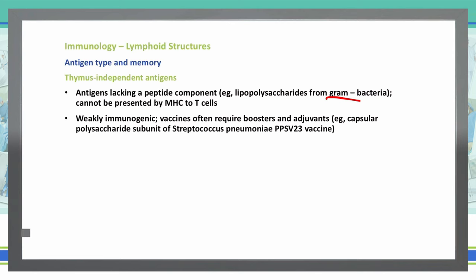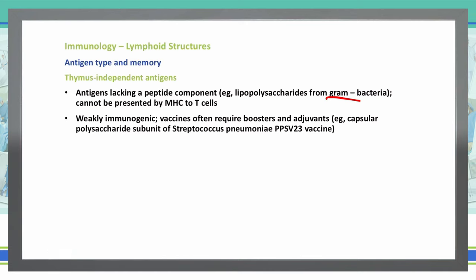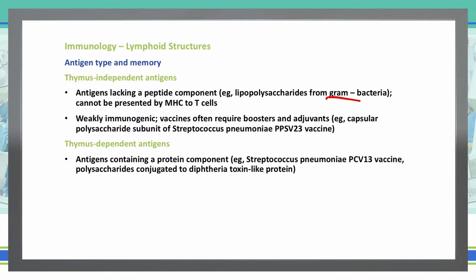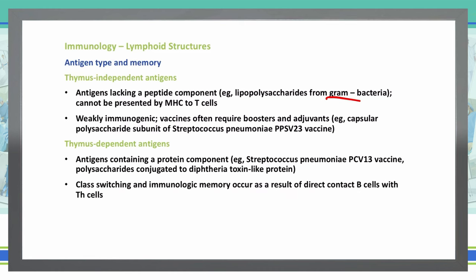For example, the capsular polysaccharide subunit of Streptococcus pneumoniae is associated with the PPSV23 vaccine. We also have thymus-dependent antigens, which are antigens that contain a protein component — for example, the PCV13 vaccine, where polysaccharides are conjugated to a diphtheria toxin-like protein. With thymus-dependent antigens, class switching and immunologic memory occur as a result of direct contact between B cells and T helper cells.